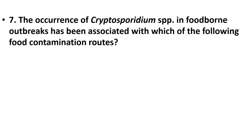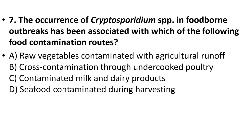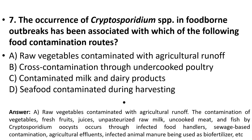Seventh question: The occurrence of Cryptosporidium species in foodborne outbreaks has been associated with which food contamination route? Options: A. raw vegetables contaminated with agricultural runoff, B. cross-contamination through undercooked poultry, C. contaminated milk and dairy products, D. seafood contaminated during harvesting. The answer is option A, raw vegetables contaminated with agricultural runoff.